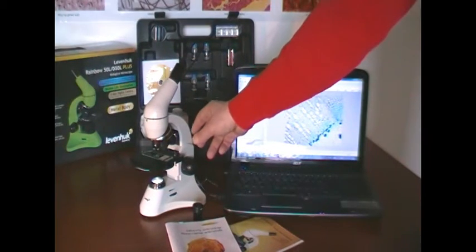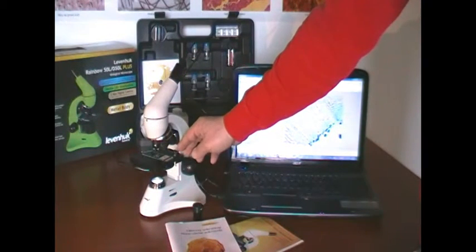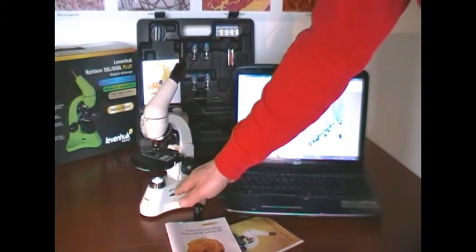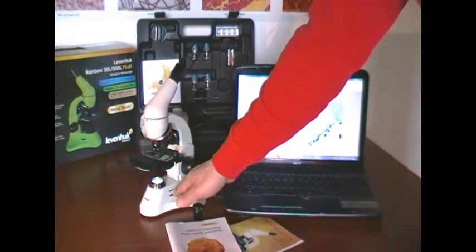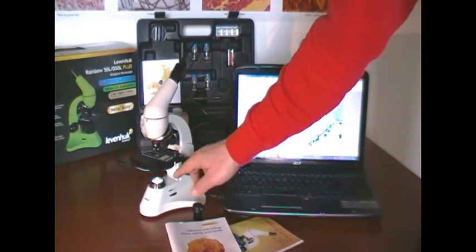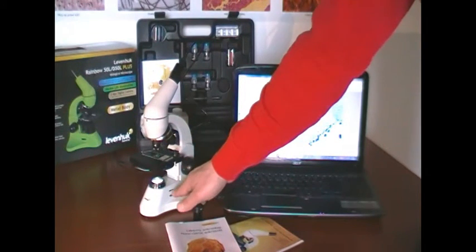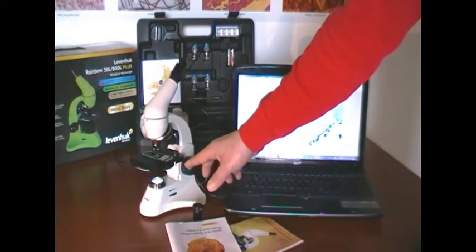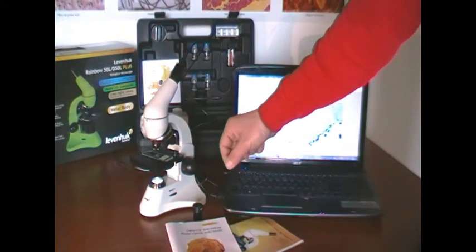The microscope has a Barlow lens and a stage with fastening clips, plus sample illumination, both the lower and upper parts. It is equipped with a condenser, and the light brightness is adjustable. It has a 360-degree rotatable head.